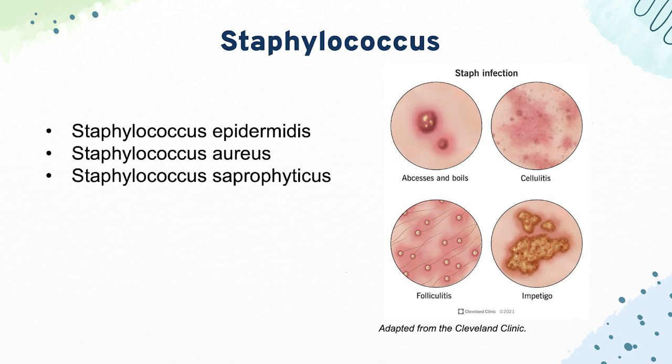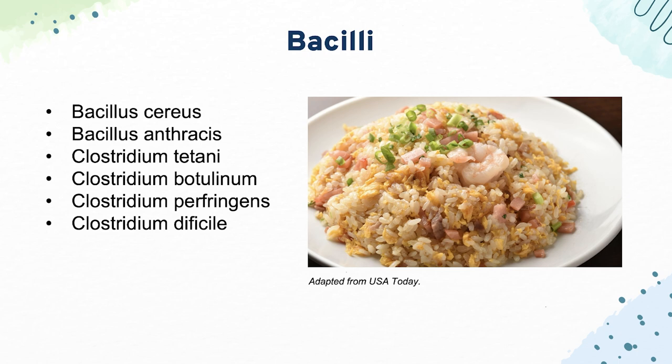Finally, we have Staphylococcus saprophyticus, which is known for causing UTIs. Next up are the bacilli. Our first one is Bacillus cereus, which is known for causing infections in people who have eaten reheated rice — they love to ask that fact. Next is Bacillus anthracis, which causes both cutaneous and pulmonary anthrax. I would know the manifestations of those for the exam and how they differ.